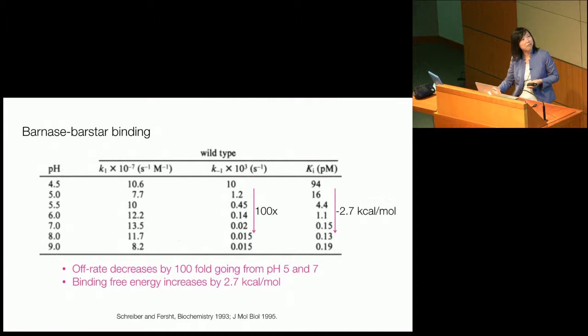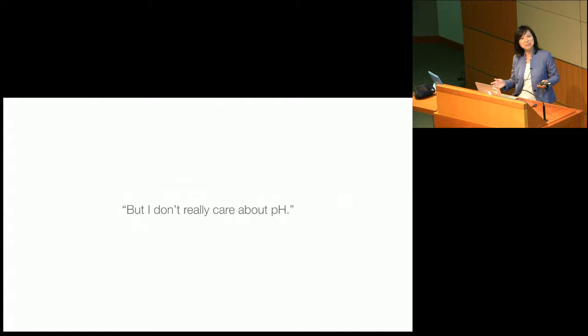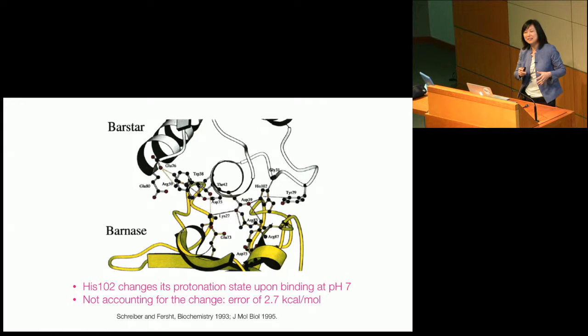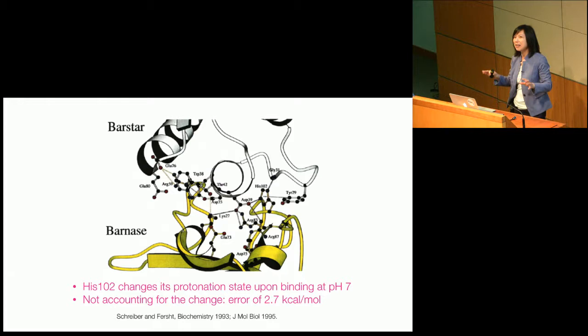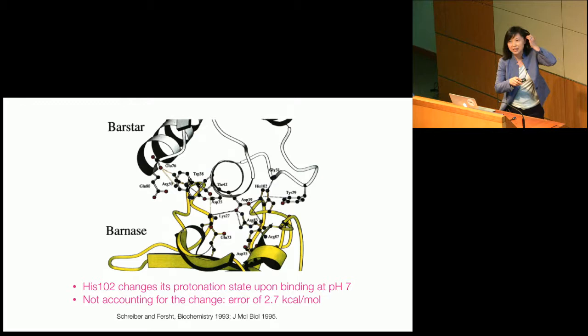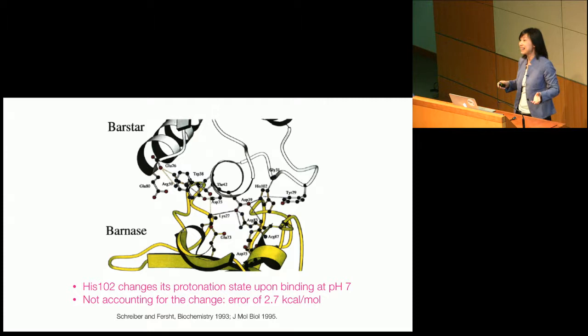You can also see that consequently the ΔG value is changing by 2.7 kcal per mole by this decrease in the off rate. But many people would say they don't care about pH. Here's an example: all we want is the binding free energy at pH 7, and it turns out histidine 102 changes its protonation state upon binding. By not accounting for this change, the error would be 2.7 kcal per mole, which is really large.